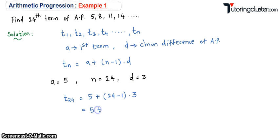This is equal to 5 plus, what is 23 into 3? It is 69. And 69 plus 5 is 74. So what is the 24th term of the AP? It is 74. This will be your answer.